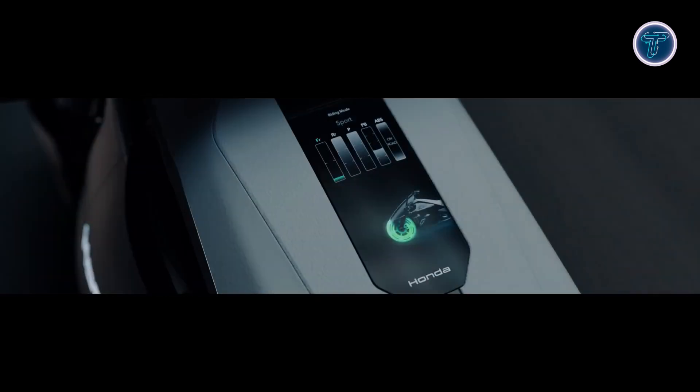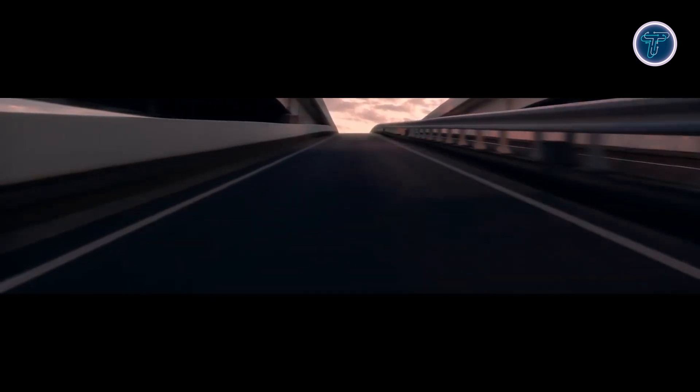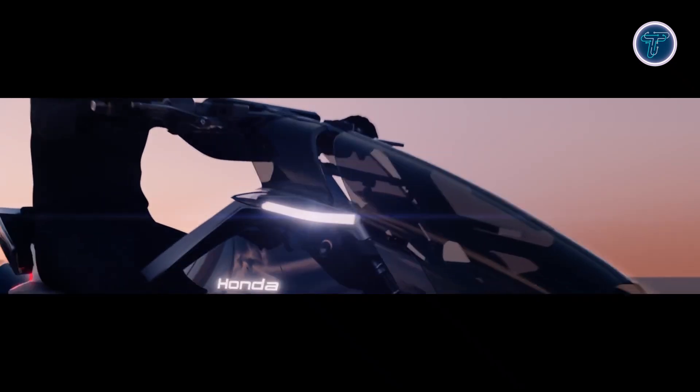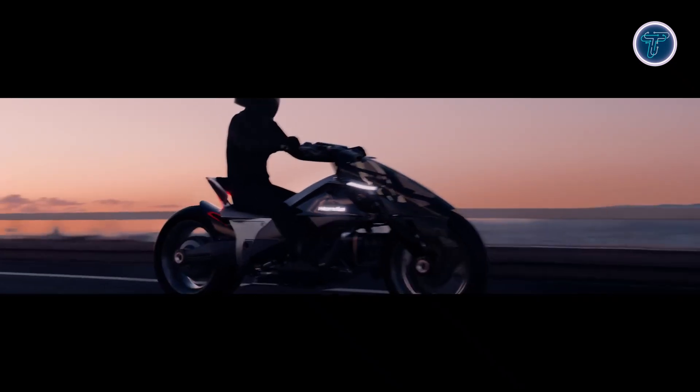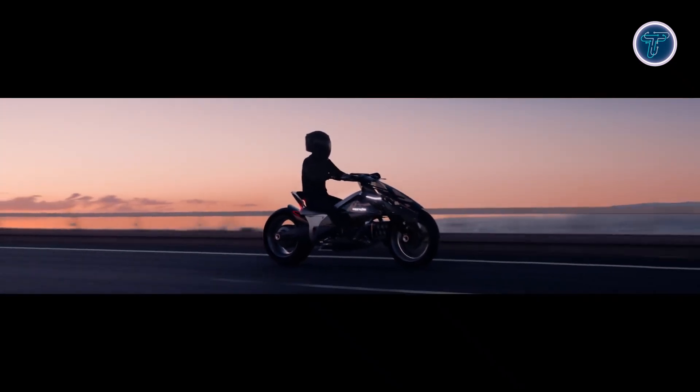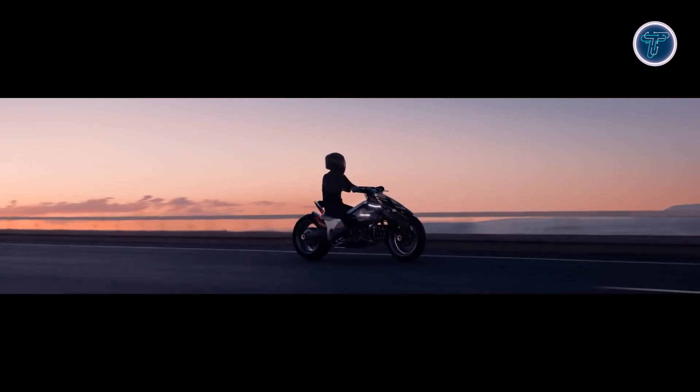The cockpit integrates dual screens for ride information, motor feedback, and riding modes, with camera-based mirrors keeping the bike sleek and uncluttered. Honda positions the Outlier not just as an EV prototype, but as a conceptual exploration of the possibilities electric two-wheelers can achieve in performance, design, and rider experience.